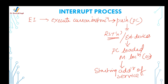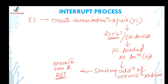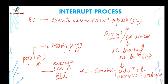The service routine is the task that the external device wants the microprocessor to perform. The service routine is executed, and before the end of the service routine there must be a return instruction, which makes the microprocessor pop the program counter value from the stack. This transfers control back to the main program, and the rest of the instructions of the main program will then be executed.